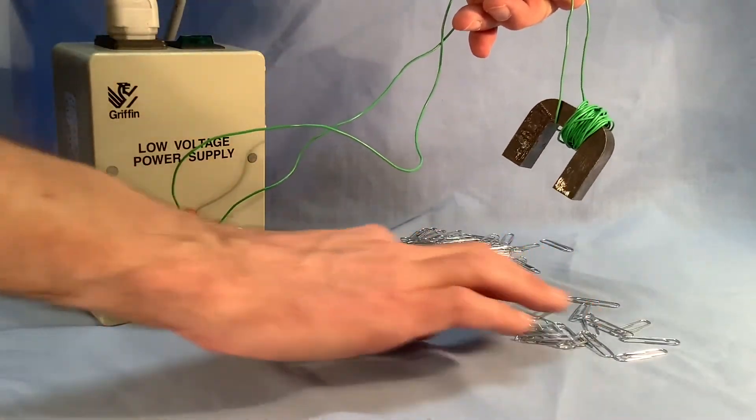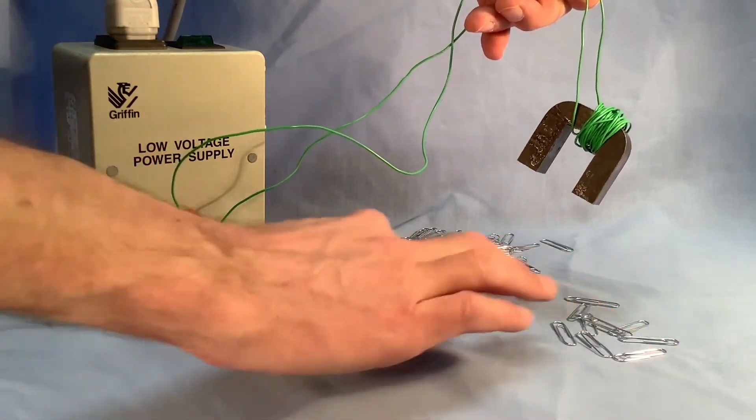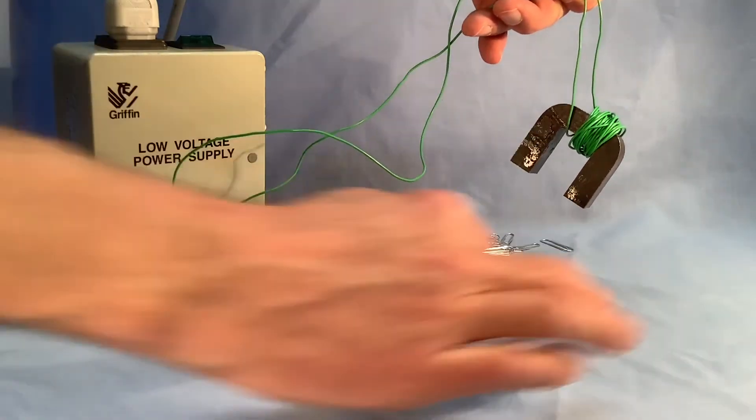And I'm getting one, two, three, four, five, six, seven, eight, nine, ten, eleven, twelve, thirteen, fourteen, fifteen, sixteen, seventeen, nineteen, twenty, twenty-one, twenty-two.